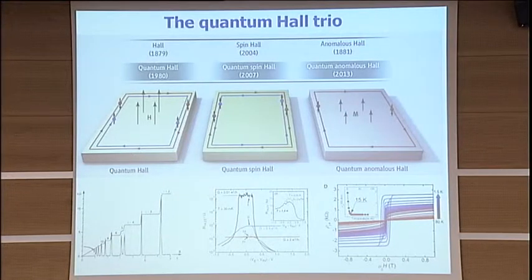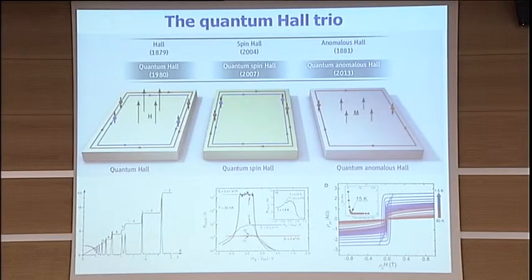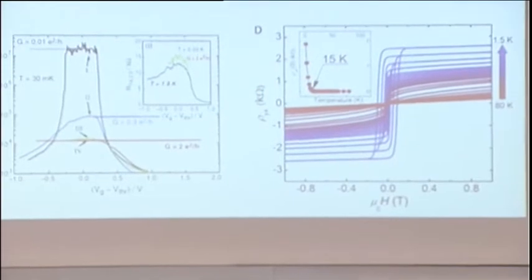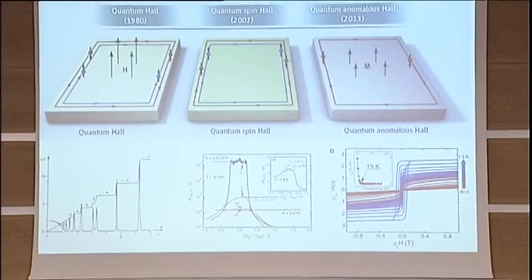One of the theoretical calculations we did in 2010, published in a Science paper, was to predict the magnetic order of this material. We predicted it has a Curie temperature of about 20 degrees Kelvin with magnetic moments pointing out of the plane. Just this year, a group at Tsinghua University led by Qi Kunxue observed, as we predicted theoretically, that in the magnetic hysteresis loop at zero magnetic field you can have a plateau corresponding to a quantized integer of the Hall conductance.